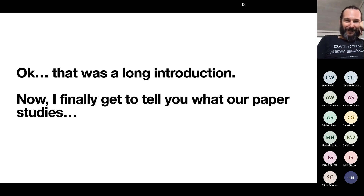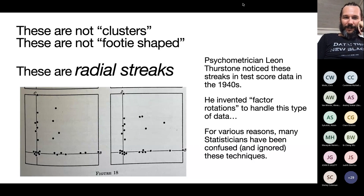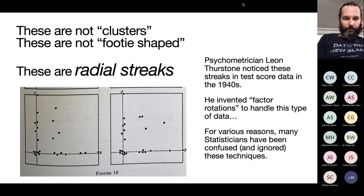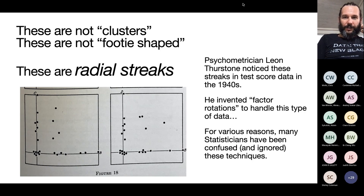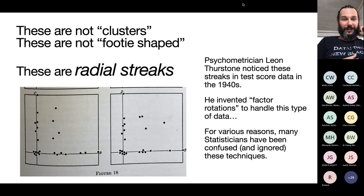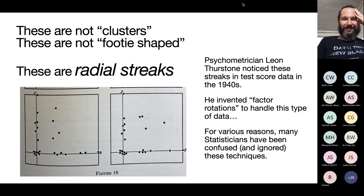This is a huge introduction — now I finally get to tell you what our paper studies. In all of those plotted examples, I would not describe the data as clusters, nor as multivariate Gaussian — what we see are better described as radial streaks. The psychometrician Thurstone noticed these streaks in test score data in the 1940s. He invented factor rotations to handle this type of data, published in his 1947 textbook. For various reasons at the time, many statisticians really didn't like it, and we've been confused about and largely ignored these techniques for the last 80 years or so.